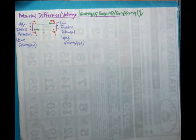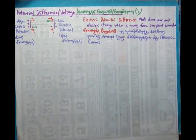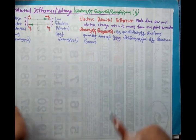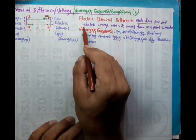Here is the definition for electric potential difference for you. Work done per unit electric charge when it moves from one point to another. So the key term you have to remember is work done per unit electric charge.